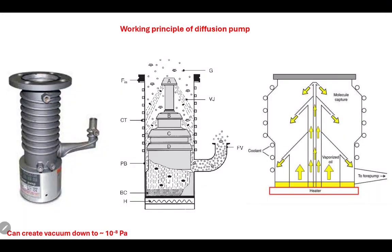In today's video I will discuss the diffusion pump. In the previous video I discussed the rotary vane pump, which is generally used for low vacuum and can also be used as a backup pump. When you need high vacuum, we need some other kind of pump, and the diffusion pump is one of them. It can create a vacuum of 10 to the power of minus 8 Pascal.